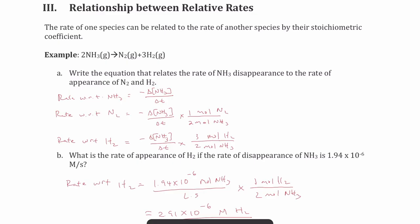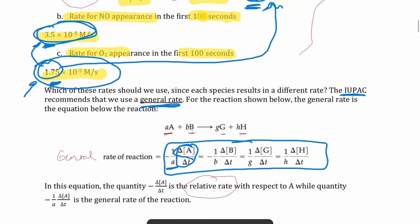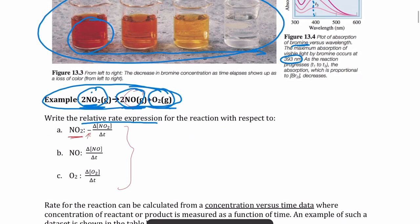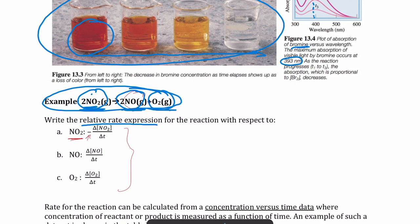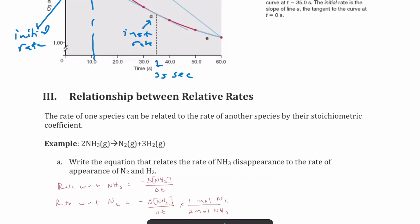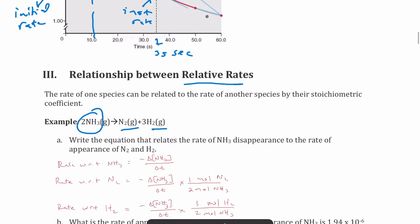Revisiting the NO2 decomposition reaction, we saw that the rates for NO2 and NO are the same, while O2's rate is half that of the other two species. This directly reflects the stoichiometry of the reaction. Knowing the rate of one species lets you calculate the rate of any other species — this is called relative rate.